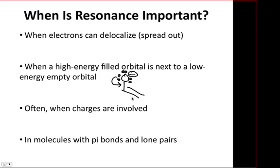The pi star is a relatively low-energy empty orbital. And so, this interaction in which we donate a lone pair into the pi star is quite favorable because we have a high-energy filled orbital interacting with a low-energy empty orbital to give us the resonance structure.